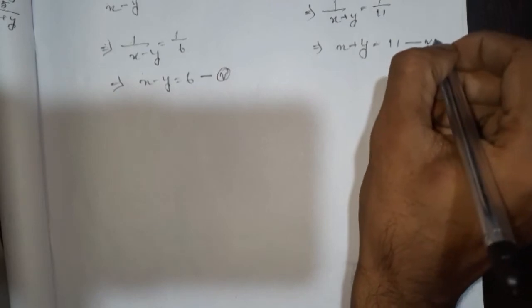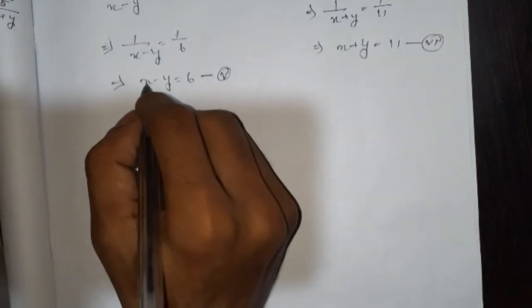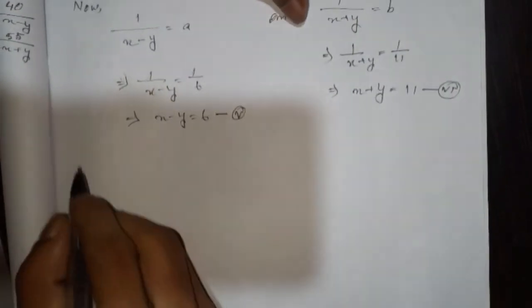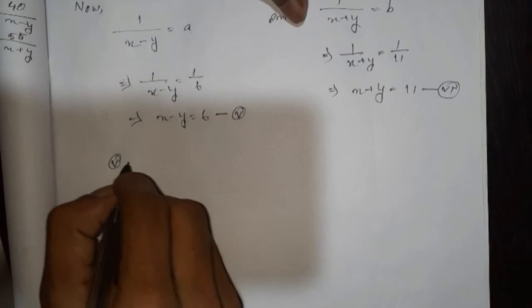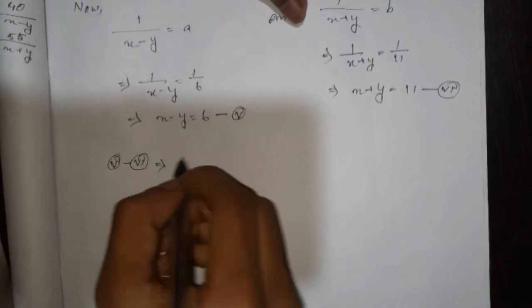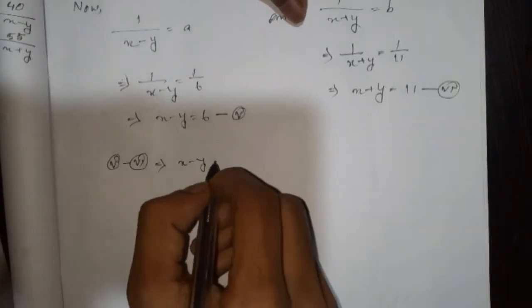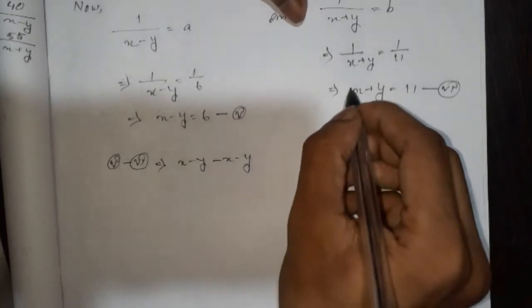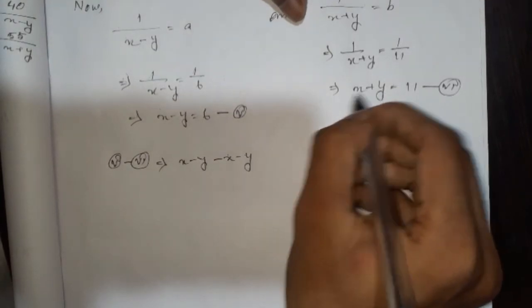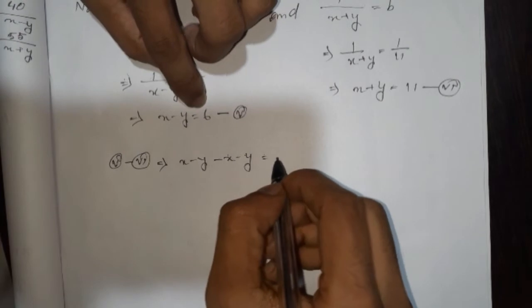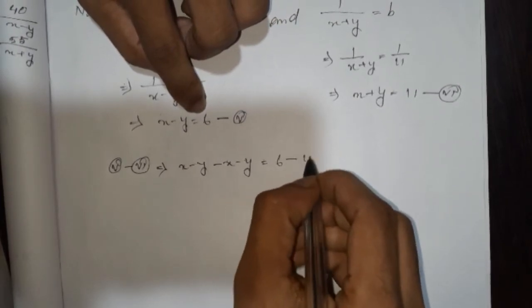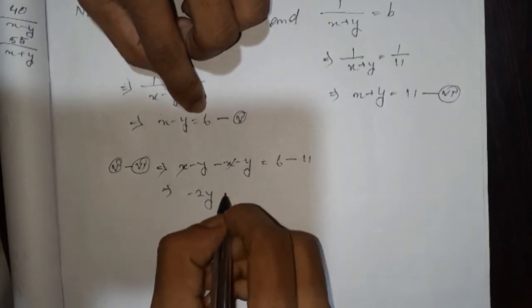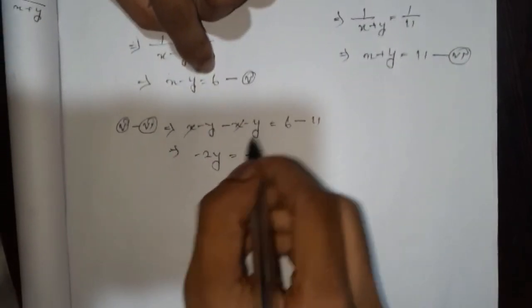Three five minus six square in a five minus y minus minus minus three minus minus minus this is equal to minus x and minus x is equal to minus x. So you will do this — and here it is equal to 6 minus 11.